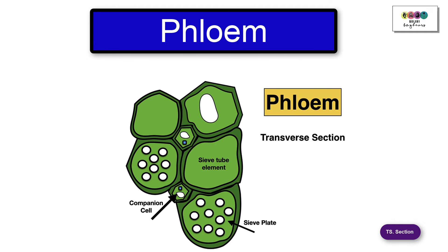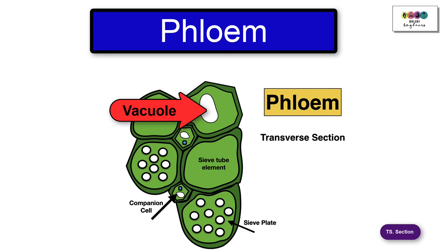Here is a transverse section of phloem. When this appears on the exams it's usually as a photograph or a very simple diagram, often not that clear. One of the features which is often not very recognisable is the vacuole, so make sure you can recognise that. There are key labels that you must include: the sieve plates, the companion cell, and the sieve tube element.